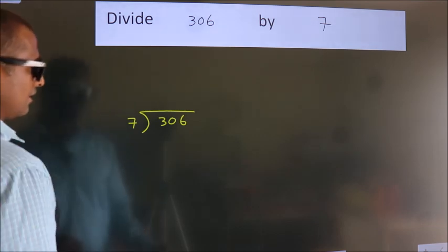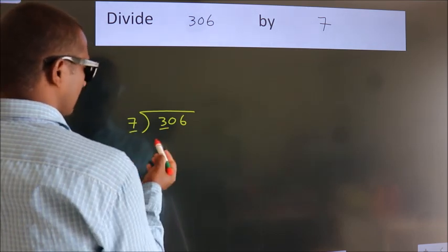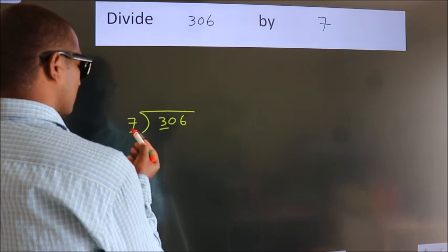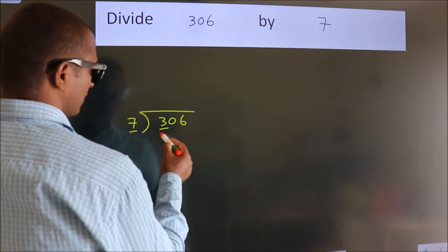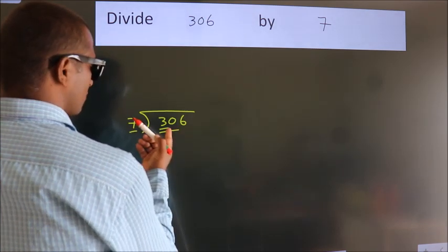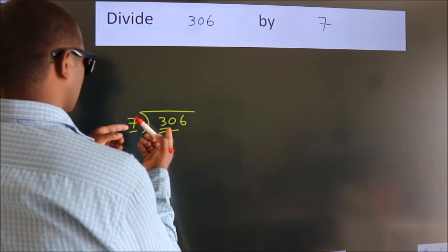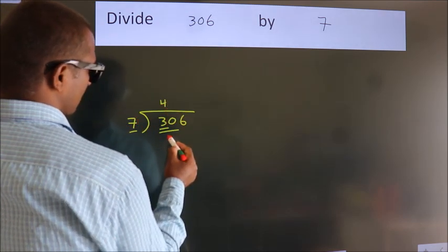Next. Here we have 3. Here 7. 3 smaller than 7. So, we should take 2 numbers. 30. A number close to 30 in 7 table is 7 fours 28.